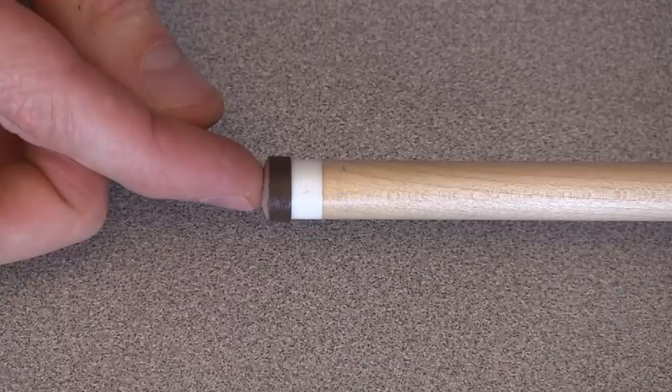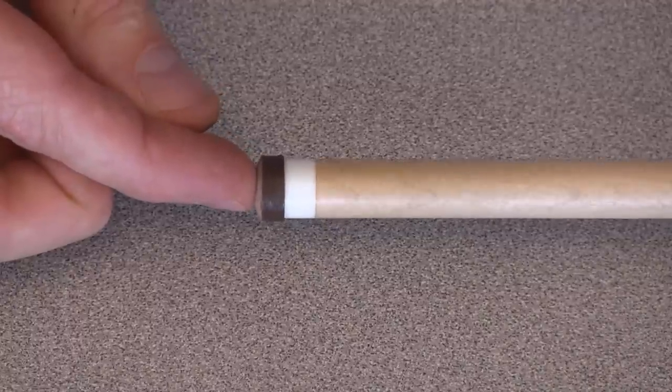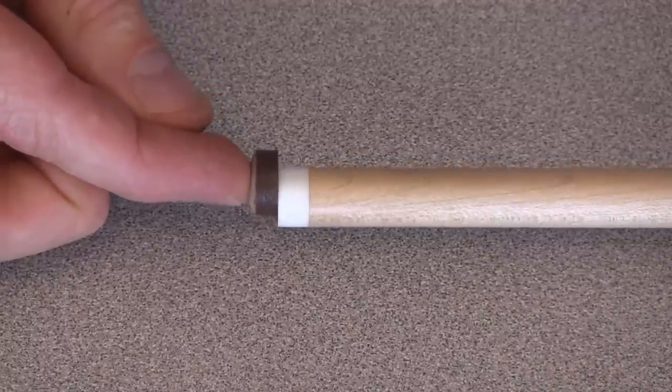The new tip should have a larger diameter than the ferrule. Test the fit of the tip on the ferrule to make sure it is oversized and fits flat with no wobble while turning and sliding.